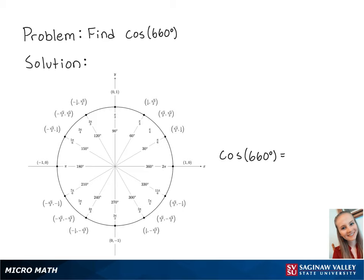For this problem, we're going to find cosine of 660 degrees. Looking at the unit circle, we can see that if we travel around the circle one full time, we will be at 360 degrees. To get to 660 degrees, we will travel around the circle an additional 300 degrees.